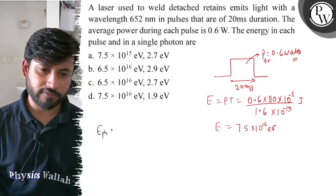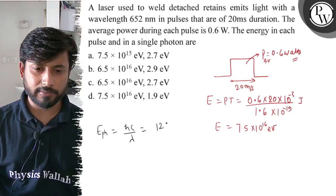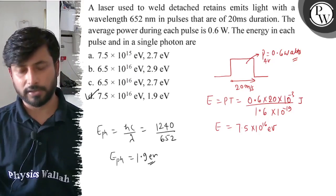Energy of a single photon equals hc/λ. hc value is 1240 and lambda is 652. So energy of photon is 1.9 electron volts. So final answer is option D. Best of luck.